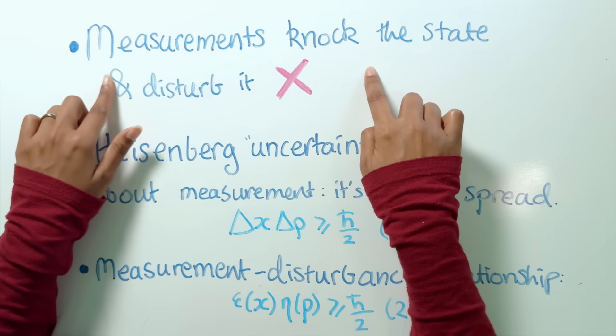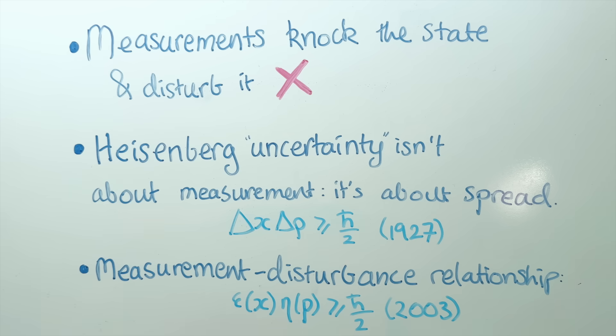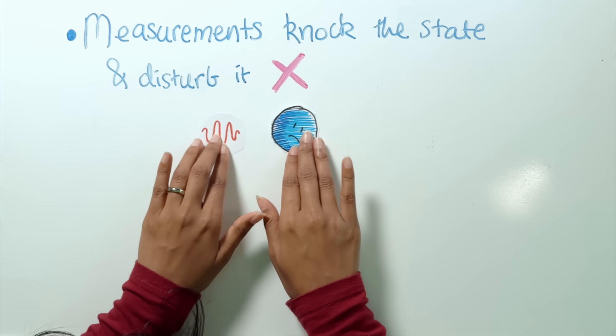In this video, I'm going to explain why the naive version of the Heisenberg Uncertainty Principle is completely wrong, why the version without measurements makes a lot of sense, and how the measurement-disturbance relationship is the Heisenberg Uncertainty Principle you thought you knew — but done correctly. It is about how measurements disturb the quantum state. First, let's get into what's wrong about the picture where measuring an electron knocks it, causing uncertainty in the momentum. Basically everything about this is wrong.